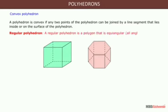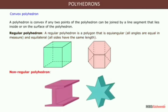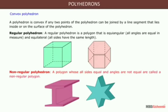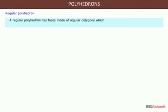A regular polyhedron is a polygon that is equiangular — that is, all angles are equal in measure. In a non-regular polyhedron, all the sides are equal but the angles are not equal. A regular polyhedron has faces made of regular polygons which meet at identical vertices.